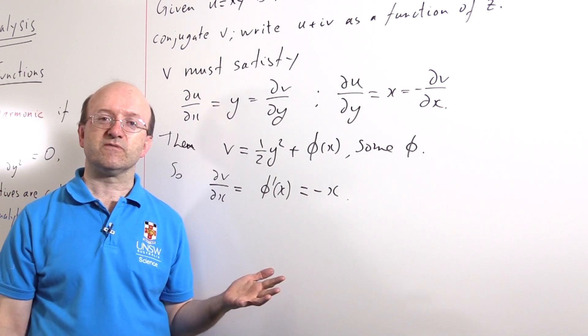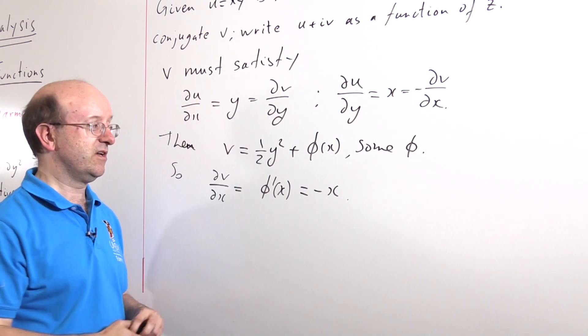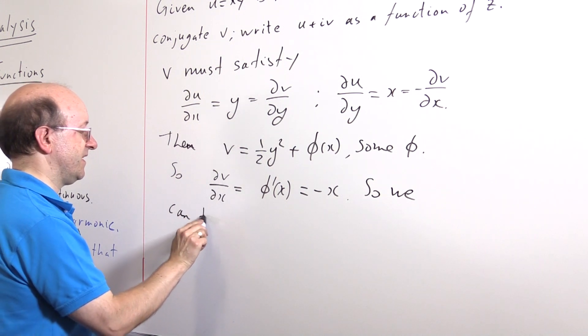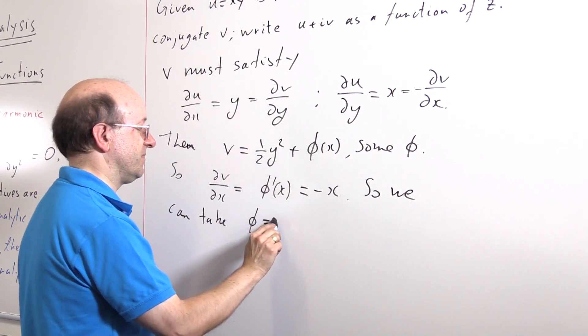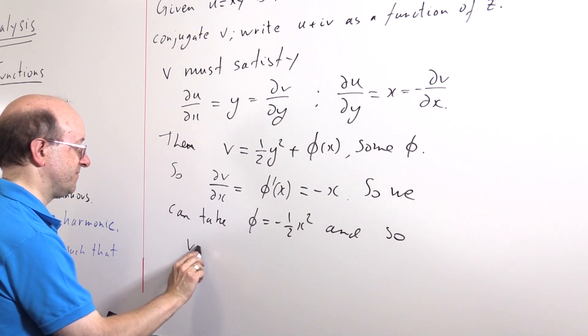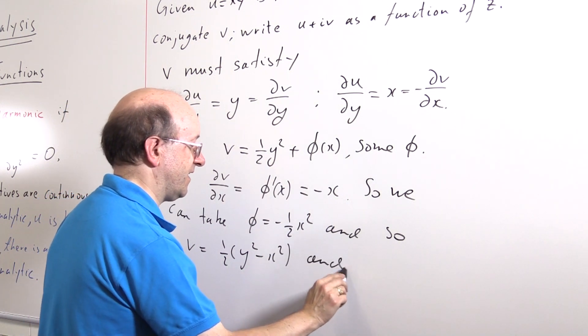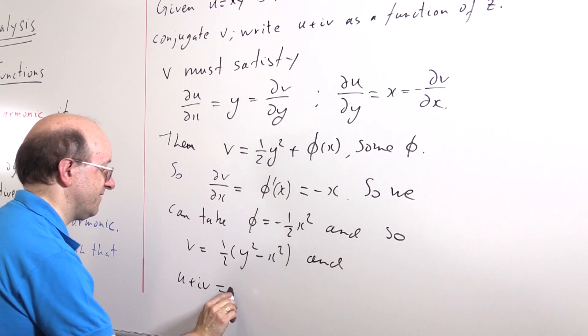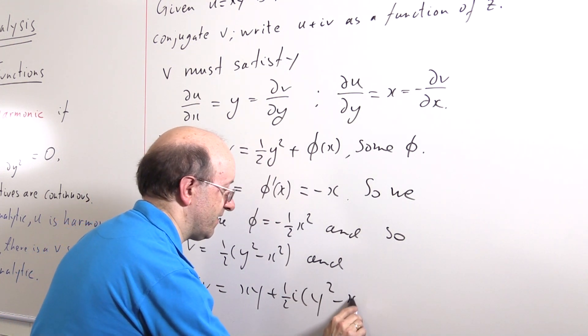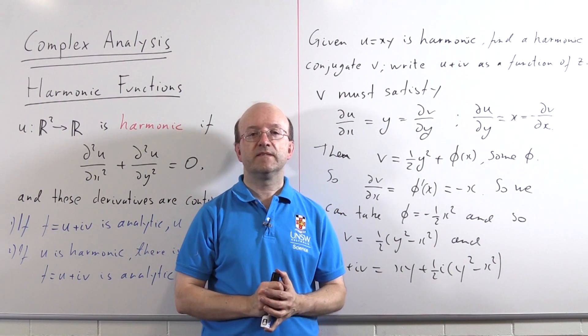Since φ'(x) = -x, φ must be -½x² plus some arbitrary constant. Well, the question only asks us for a harmonic conjugate, so we don't need to bother with the arbitrary constant. We can take φ to be -½x². And so v is ½y² - ½x². And u + iv is xy + ½i(y² - x²).